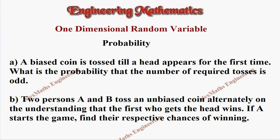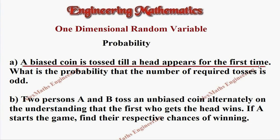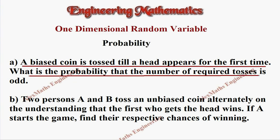Hi students, this is Alex. In subdivision A, they have given: a coin is tossed till a head appears for the first time. You have to find the probability that the number of required tosses is odd.